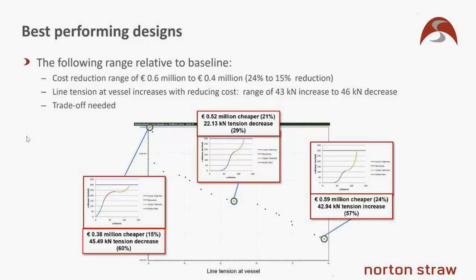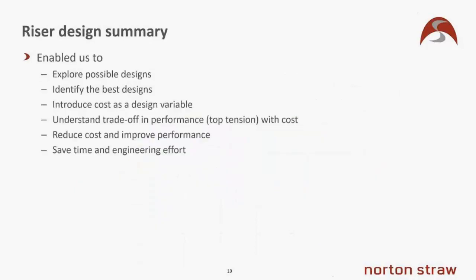The key value here is that we've introduced a non-technical variable — cost — as a design variable into our analyses. We've explored a vast field of many millions of possibilities and found the range of best designs within a few hundred iterations. We've understood the trade-off between performance and cost. And critically, through the automation process, the time and engineering effort required in the analysis process is reduced — which reduces costs both in the end design solution and in the engineering process required to find that solution.